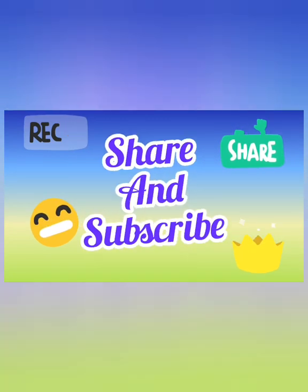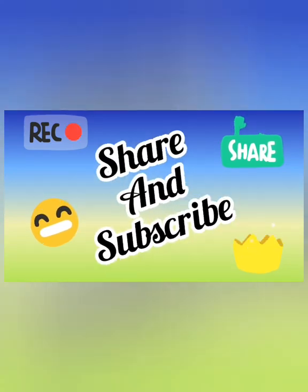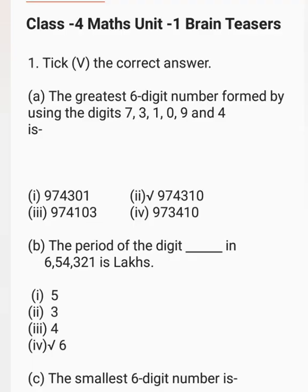Good morning students. In this video I am going to explain and solve Unit 1 Brain Digits. First question, take the correct answer. A: the greatest 6-digit number formed by using the digits 7, 3, 1, 0, 9, and 4.